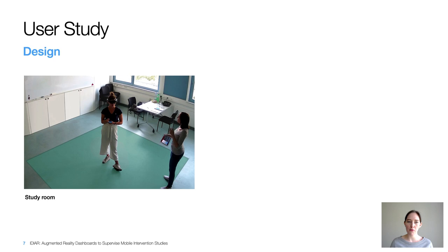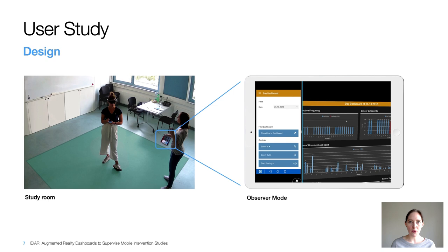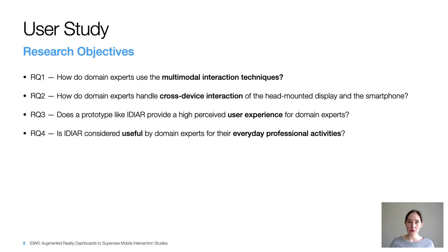The second task was to define a database rule to detect unrealistic movement data per day. We had the opportunity to work with a real-world dataset of the MyLife intervention study, completed a few weeks before our study. The experimenter used a laptop to control the procedure and also had a tablet showing the observer mode, which allowed observing the participant's augmented reality view and real-time smartphone view without intruding the user experience.